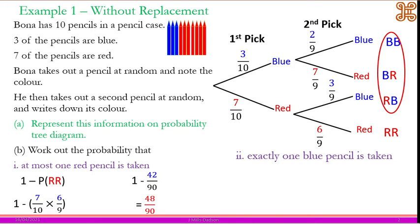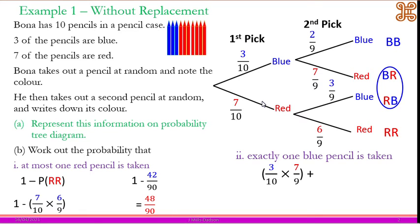For the second part — exactly one blue pencil — there are two options: blue-red and red-blue. So that is 3/10 times 7/9, plus 7/10 times 3/9, and that gives us 42 over 90. That is the first example without replacement.